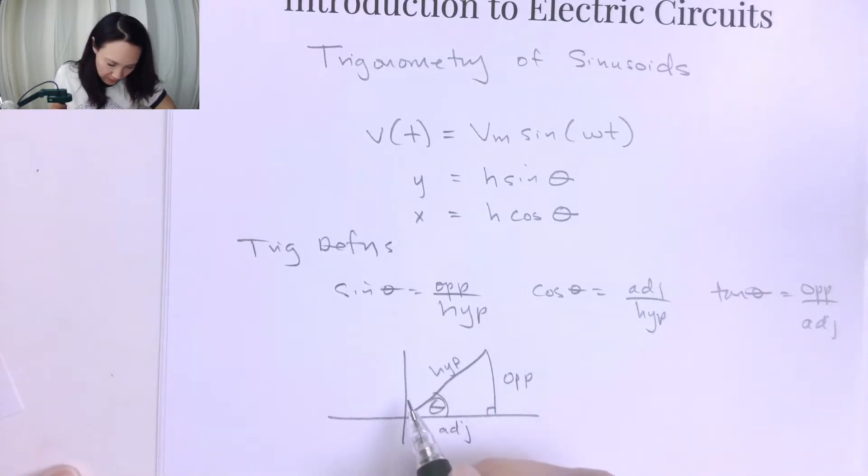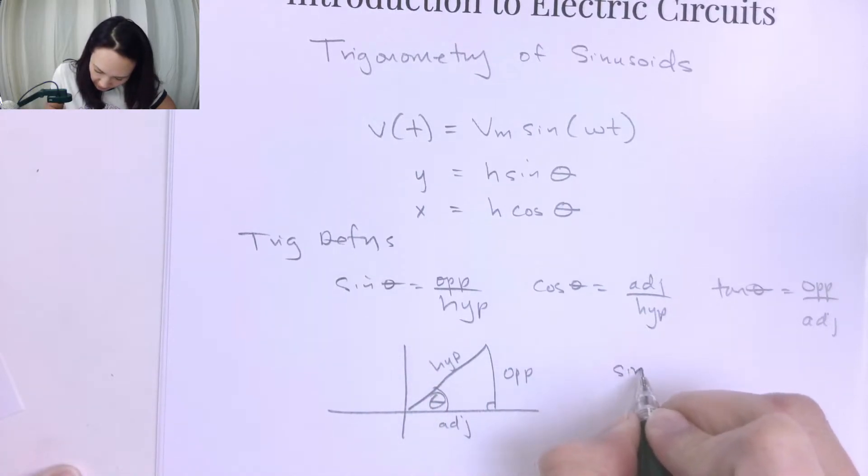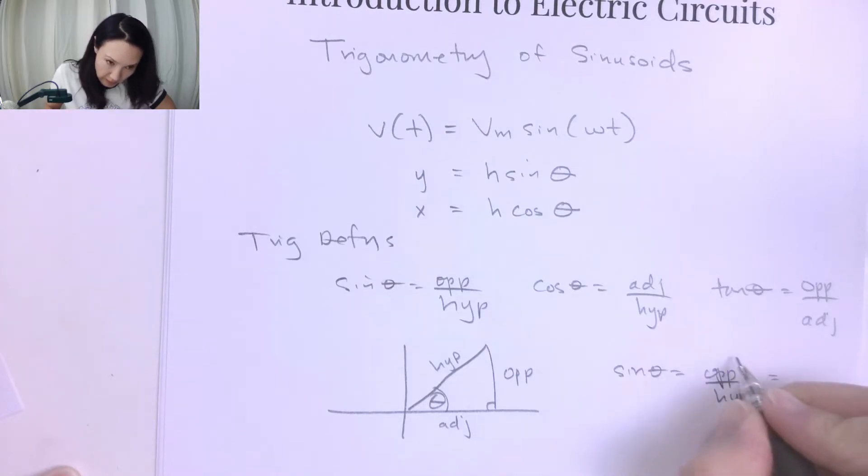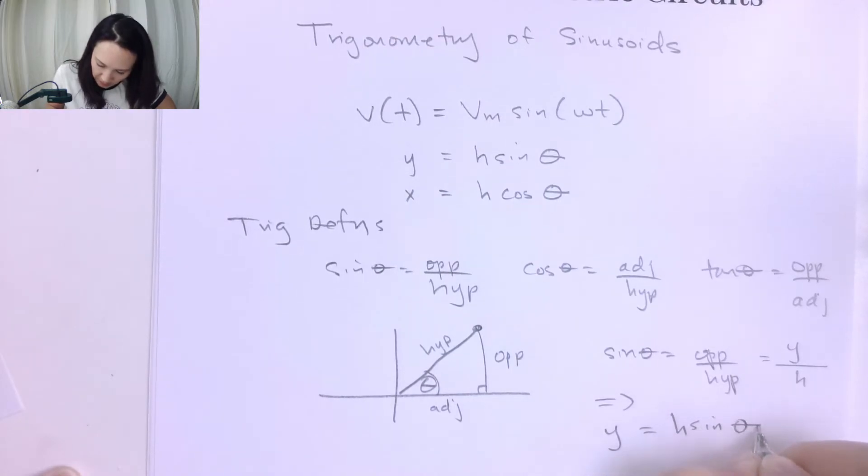So that means if sine of theta is defined as opposite over hypotenuse, then the opposite side is the Y part of this coordinate right here, and this is over H. Therefore, Y equals H sine theta.